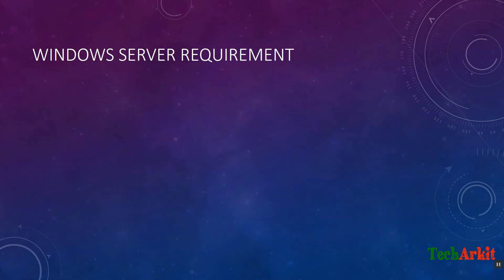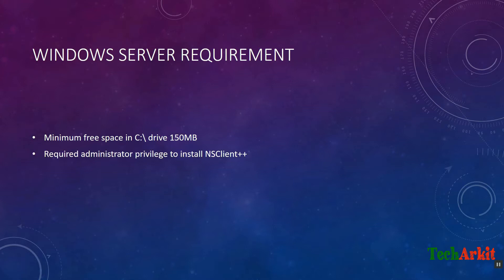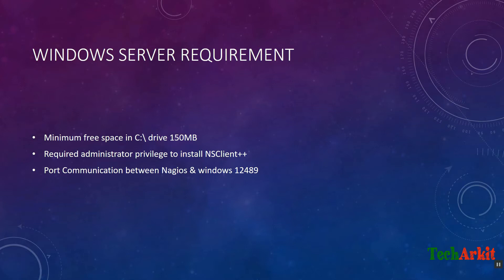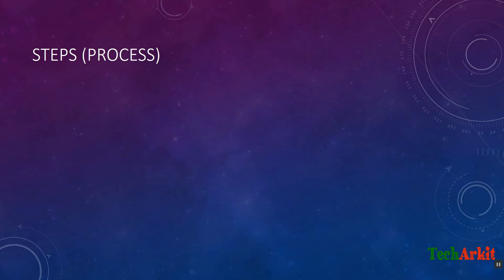Let's look at Windows server requirements when you want to install NSClient. Minimum free space on the C drive is 150 MB. Administrator privileges are required to install NSClient++. You also need port 12489 open for communication between Nagios and the Windows server — both directions — and the NSClient service must be started.